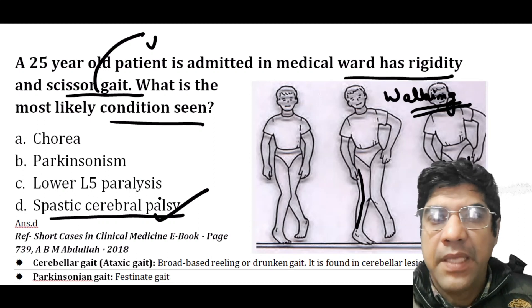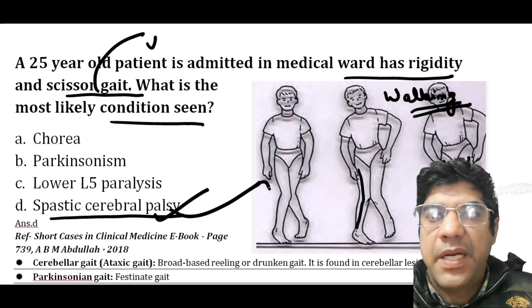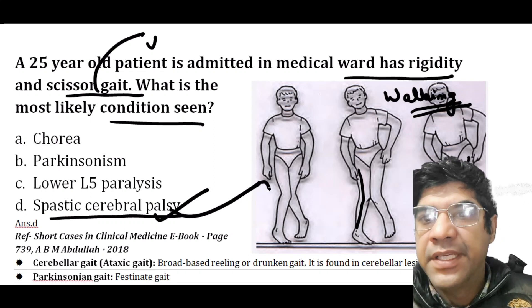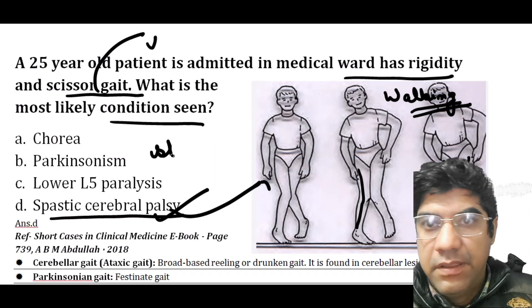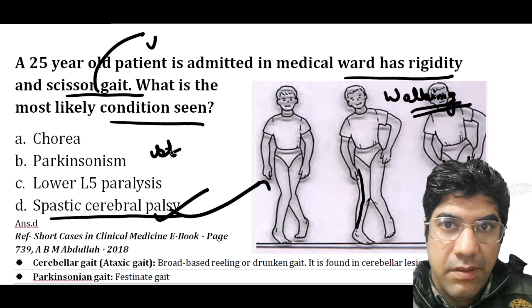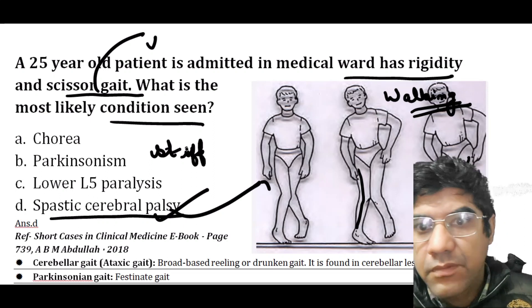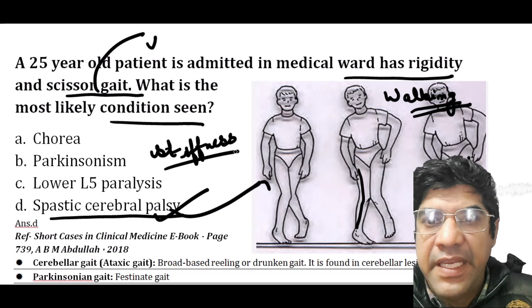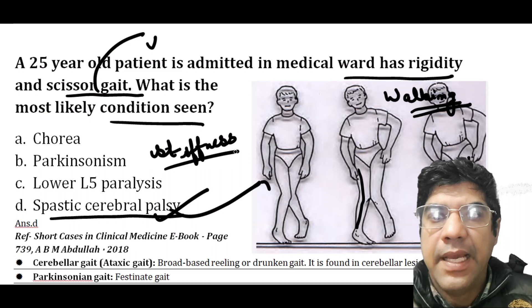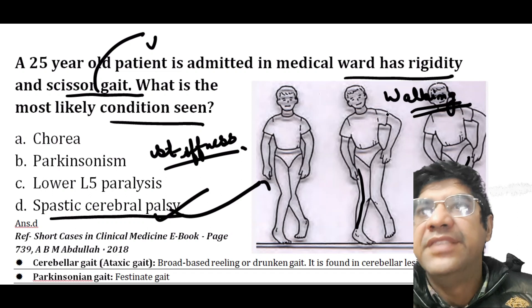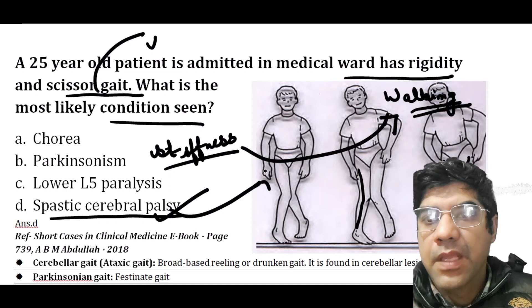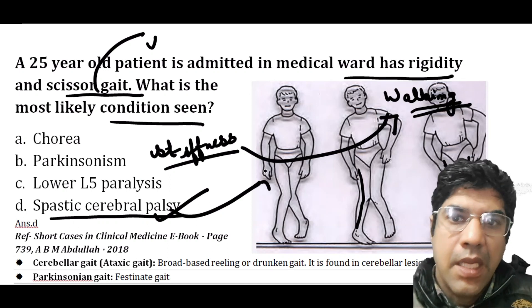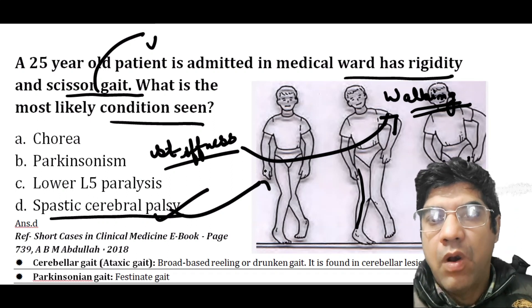Spastic paraplegia is a neurological condition characterized by stiffness and weakness in the muscles of the lower limbs. The increased muscle tone (spasticity) in the leg muscles can lead to the scissor gait pattern. As a person walks, tightness in the leg muscles causes the legs to cross or scissor. Scissor gait is generally observed in two conditions: spastic paraplegia and cerebral palsy.